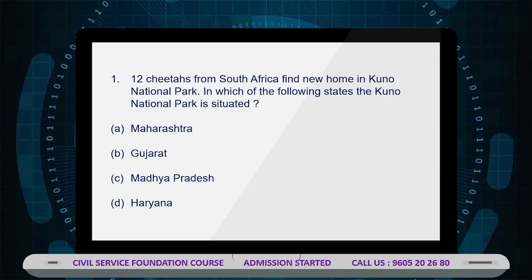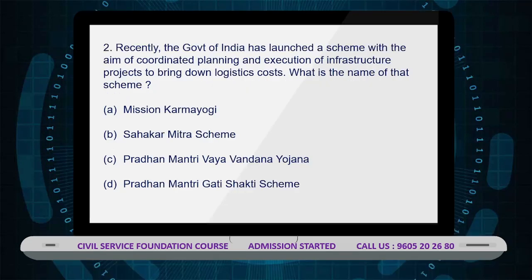Cheetahs, which once roamed the northern plains of India, became extinct in India in 1948. As part of Project Cheetah, the Government of India aims to re-establish the species in its historical range. It is the world's first intercontinental large wild carnivore translocation project.